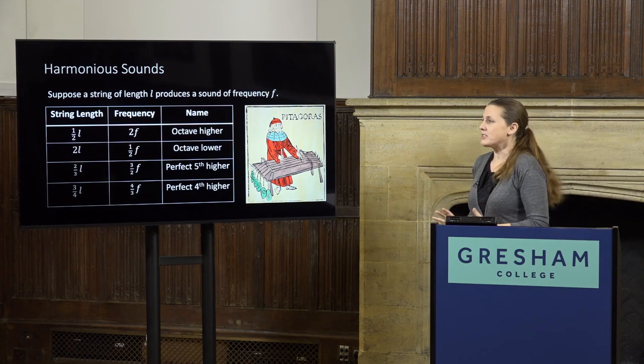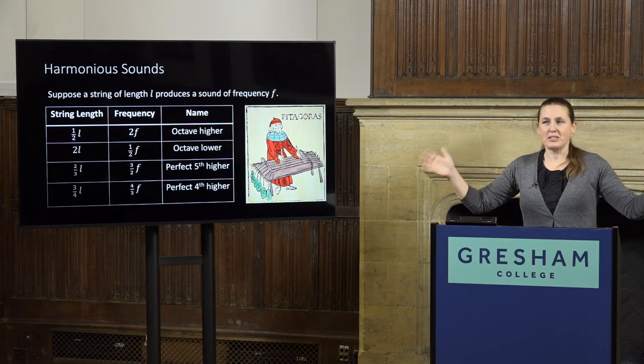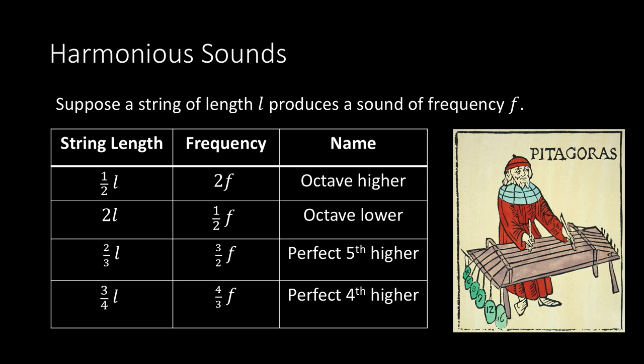The relationships Pythagoras found are these: if you take a string of length L and then halve its length and play the two sounds together, those two sounds are pleasing. Today we say the second note — corresponding to the shorter string with double the frequency — is an octave higher than the first. On the other hand, if you double the string's length, that halves its frequency, and we say the second note is an octave lower.